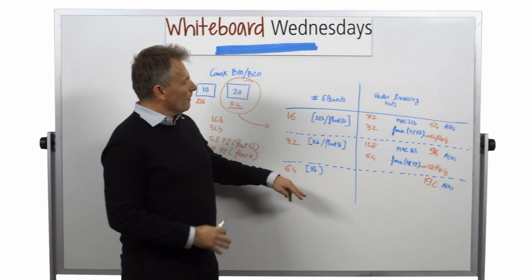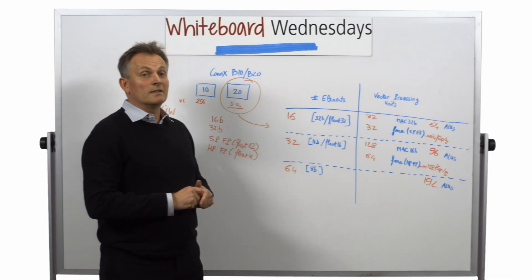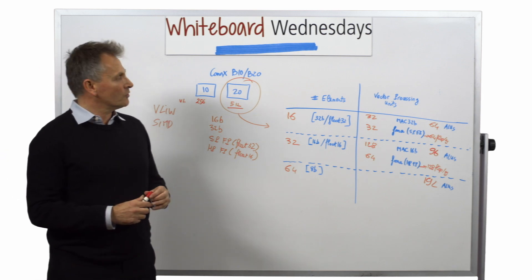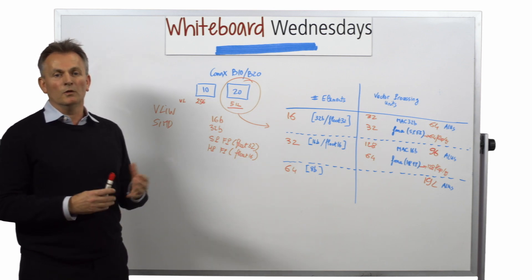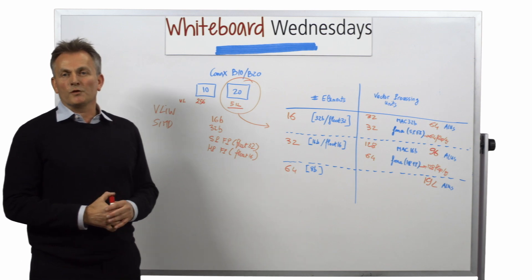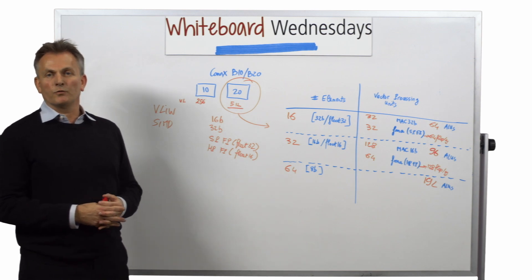This is part of the vector processing unit that are available with the B10 and B20. There are, of course, more processing units also in order to be able to efficiently process the digital signal processing necessary.